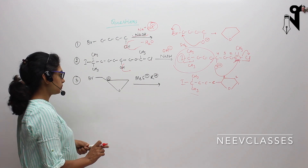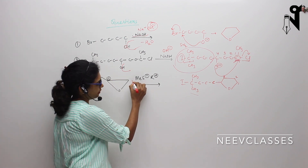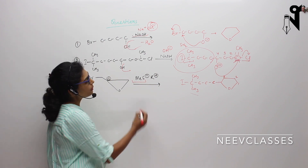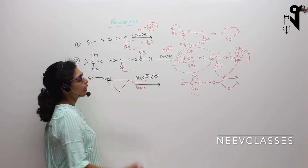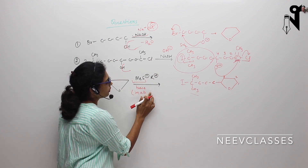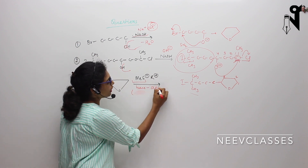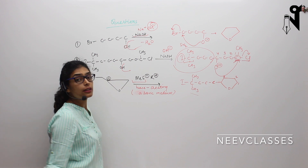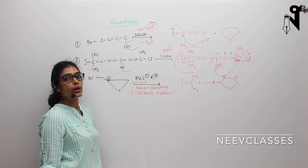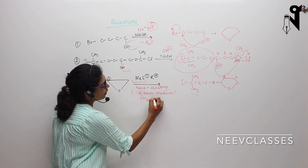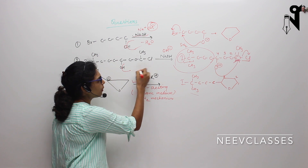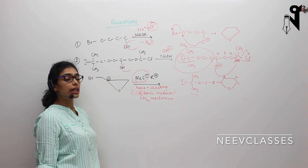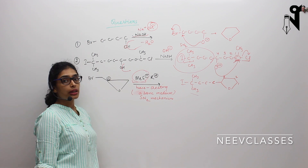Now let's see the next question. We have a base — this is a question which includes all the concepts we have learned. This is a base creating a basic medium. We have learned that if an ether is present in a basic medium, the reaction goes through SN2 mechanism. And we know this particular nucleophile is a strong nucleophile, so it would preferably go through SN2. So what are the different carbons where this nucleophile can attack? Let's mark them: carbon number 1, carbon number 2, and carbon number 3.